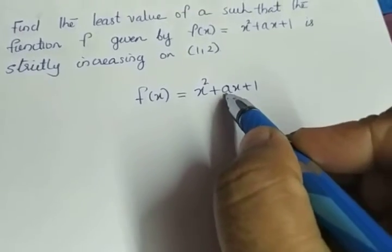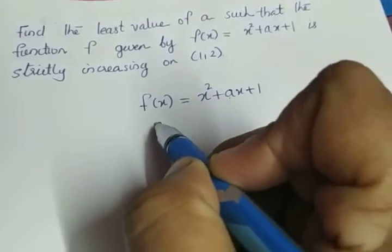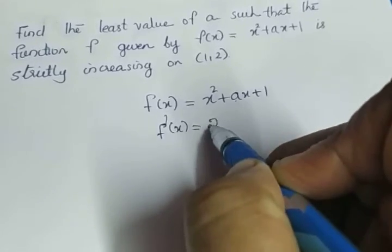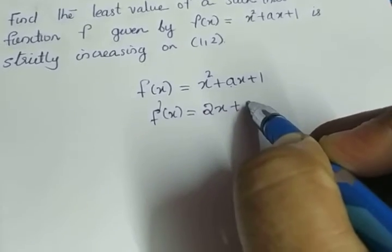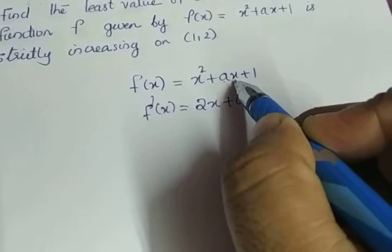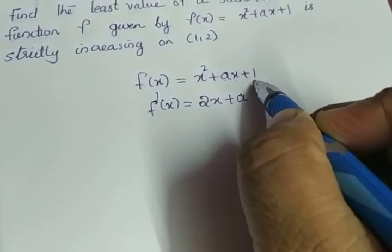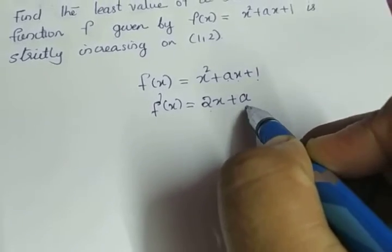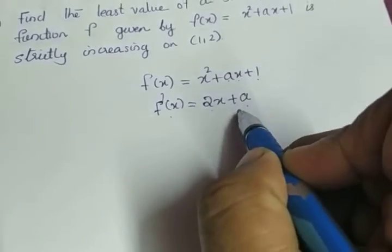Here a is a constant and we have to find the least value of a. Taking the derivative, f'(x) is equal to the derivative of x² which is 2x, plus a is a constant so derivative of x is 1, and 1 itself is a constant so its derivative is 0. So we are getting f'(x) = 2x + a.